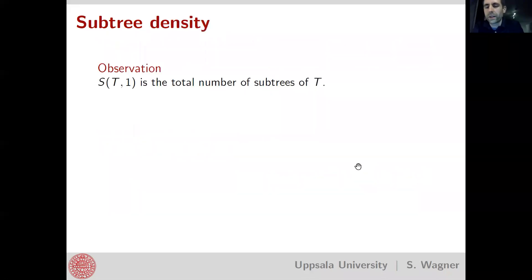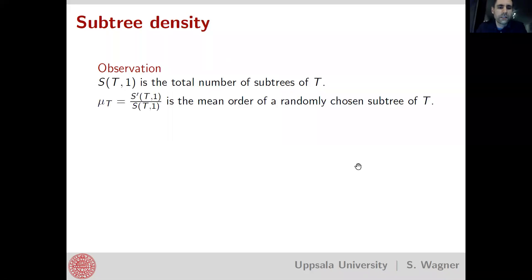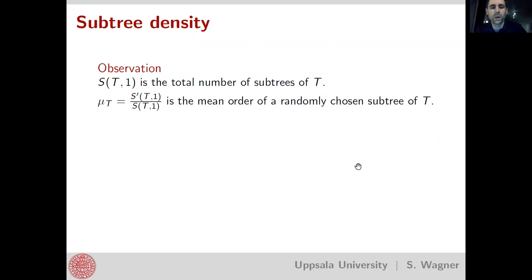If I plug in one into this polynomial, I get the total number of all subtrees of T. If one takes the derivative at one and divides by the total number of subtrees, this gives the mean order of a randomly chosen subtree — that is, the average number of vertices obtained when choosing a subtree at random. This quantity is denoted μ(T) and is called the mean order or mean subtree order of the tree T.